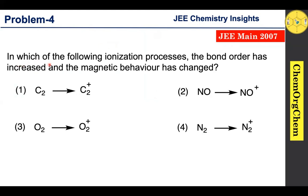In which of the following ionization processes has the bond order increased and the magnetic behavior changed? There are four options — let's figure out together which one is the correct option for this question.